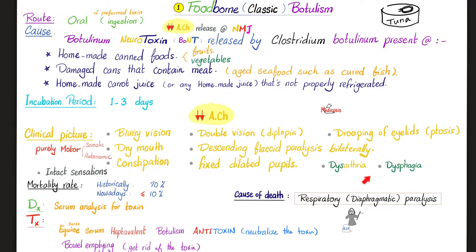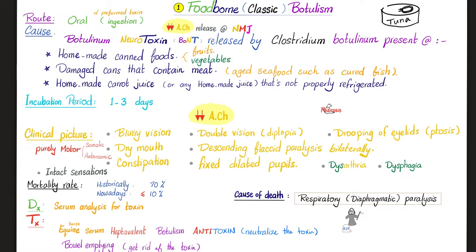Additional symptoms include descending flaccid paralysis bilaterally, constipation, fixed dilated pupils because they cannot constrict due to absent acetylcholine — there are no parasympathetic fibers to constrict them — dysarthria and dysphagia, because the cranial nerves leaving the medulla cannot release acetylcholine onto the muscles. Notice that all of these are motor symptoms, but sensation is absolutely fine. You can get motor somatic and motor autonomic symptoms, but no sensory deficits, because botulism affects the motor end plate at the neuromuscular junction — motor, not sensory. Mortality rate decreased from 70% in the past to less than 10% currently. Diagnosis: serum analysis for the botulinum neurotoxin. Treatment: horse serum heptavalent botulism antitoxin to neutralize the toxin, bowel emptying such as gastric lavage, and antibiotics to eliminate the bacteria so they stop producing new toxin.